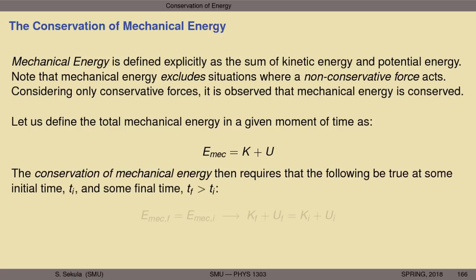The conservation of mechanical energy requires the following: at some initial time T_i and some final time T_f, the mechanical energy at the final time must equal the mechanical energy at the initial time. That is, the sum of kinetic and potential energies at the later time T_f is unchanged and equal to the sum at the earlier time T_i. That is a statement of conservation. It doesn't mean kinetic energy is the same, and it doesn't mean potential energy is the same, but it requires that the sum of those two things be the same. Many careful experiments isolating systems from non-conservative forces confirm this is realized in nature.